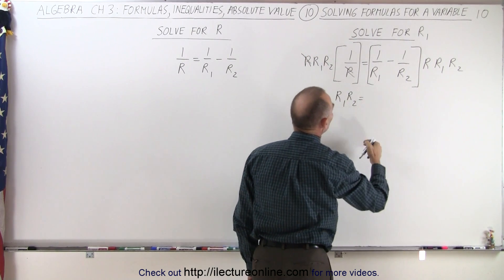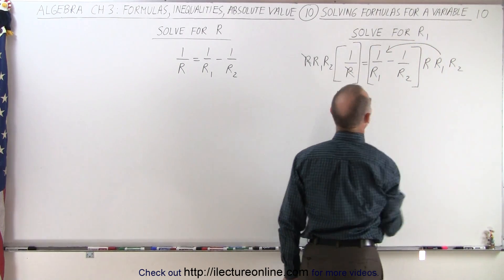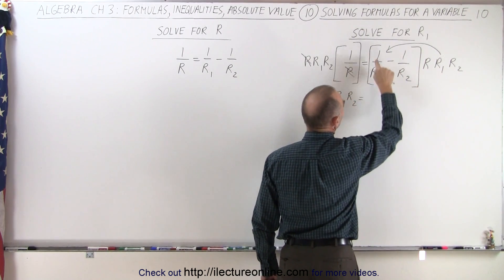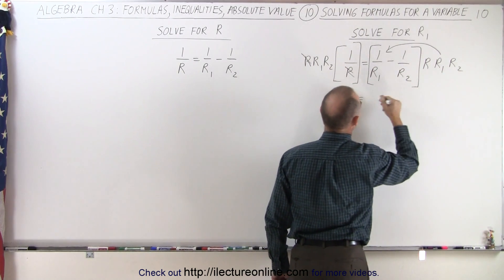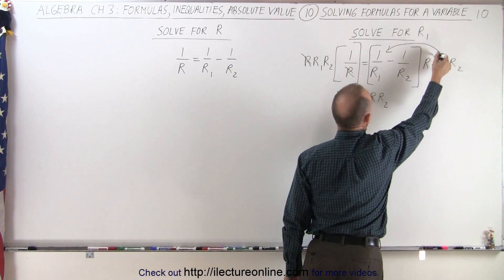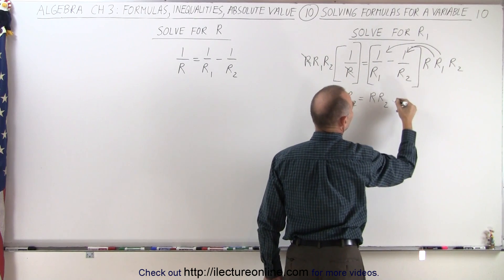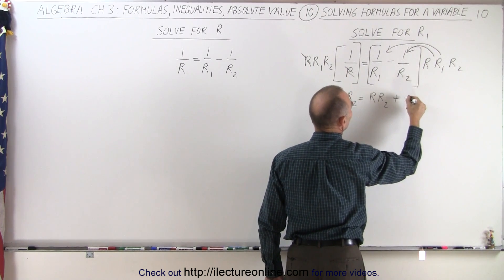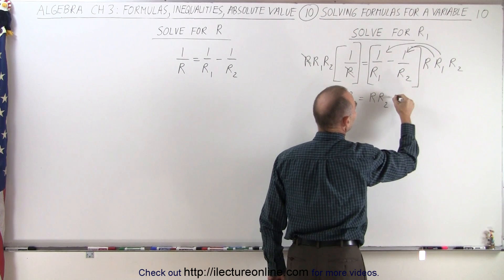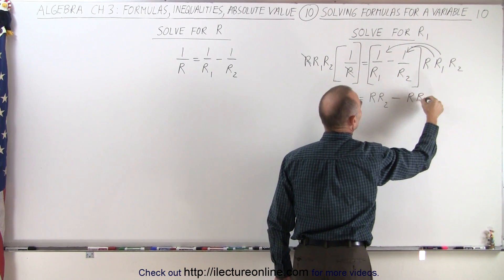On the right side we have two fractions. First, multiplying by the first fraction — the R1s cancel out, and we're left with R times R2. When we multiply by the second fraction, note that it's a minus sign — the R2s cancel out, and we're left with R times R1.